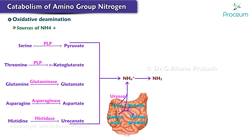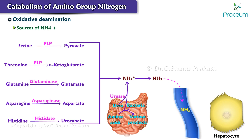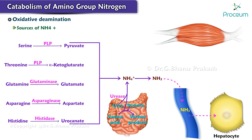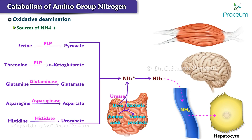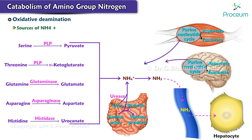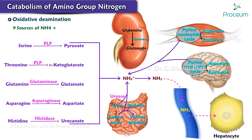NH3 from intestinal urea cleavage enters the hepatic portal vein and travels to the liver. In muscles and the brain, but not in the liver, the purine nucleotide cycle releases NH4+. Glutamine and asparagine release amino groups as NH4+ by glutaminase and asparaginase respectively. The glutaminase reaction is particularly important in the kidney, where the NH4+ produced is excreted directly into the urine, where it forms salts with metabolic acids, facilitating their removal.